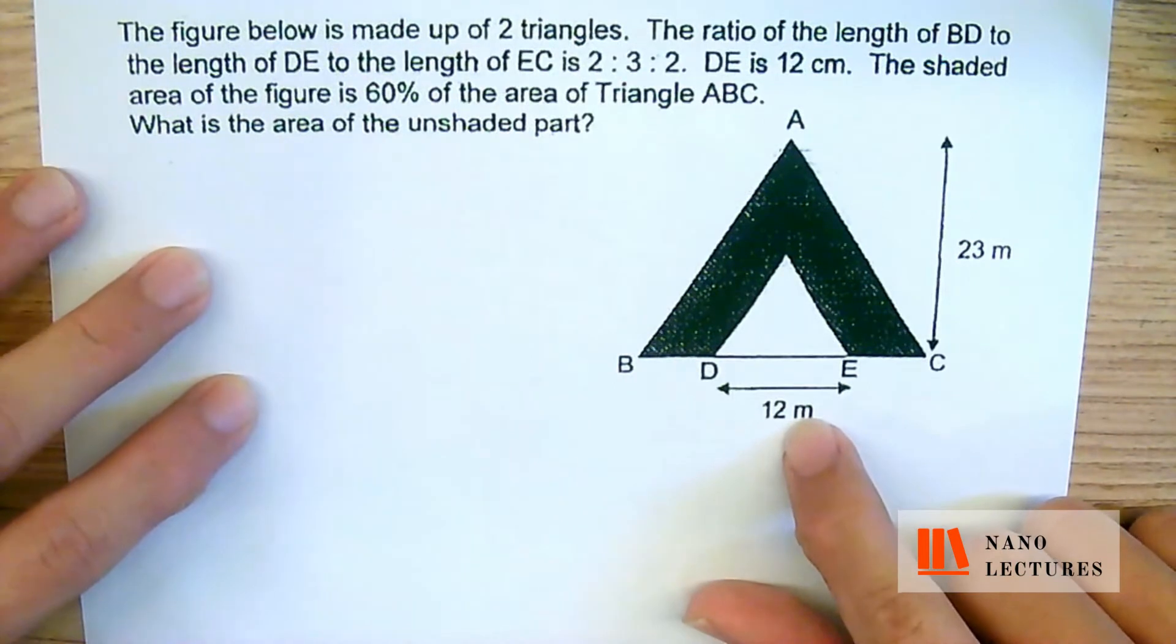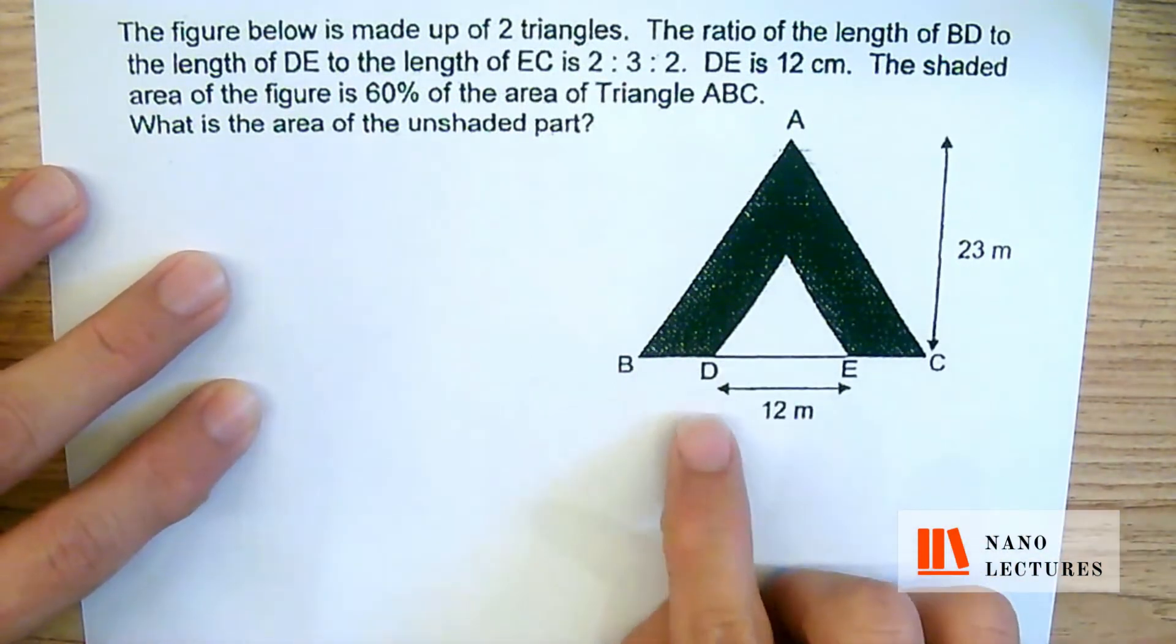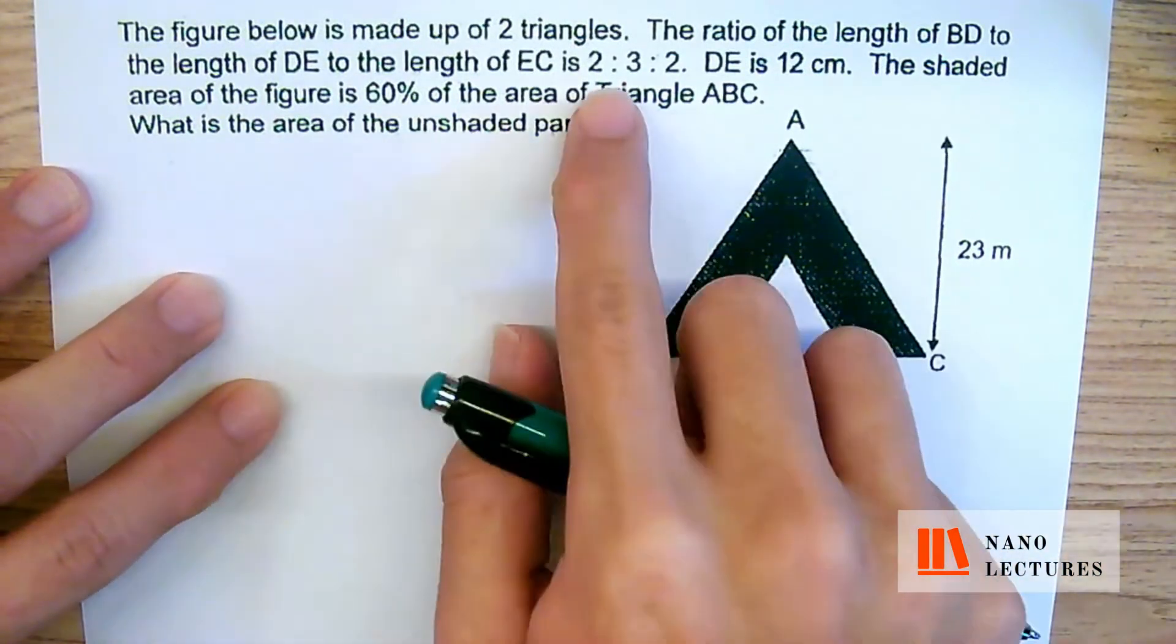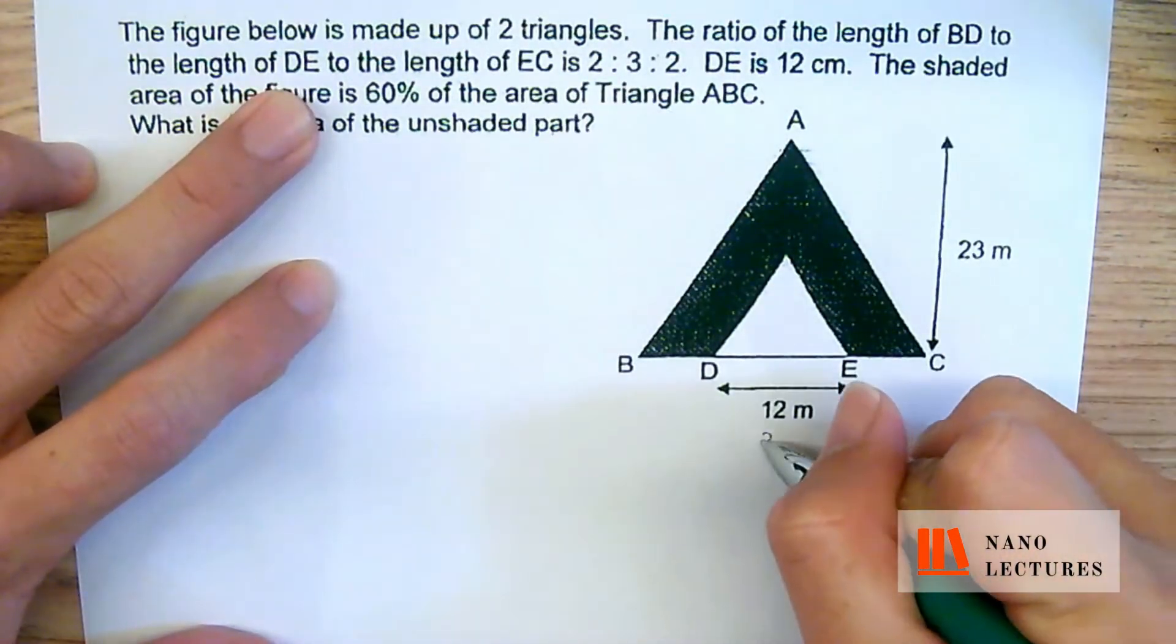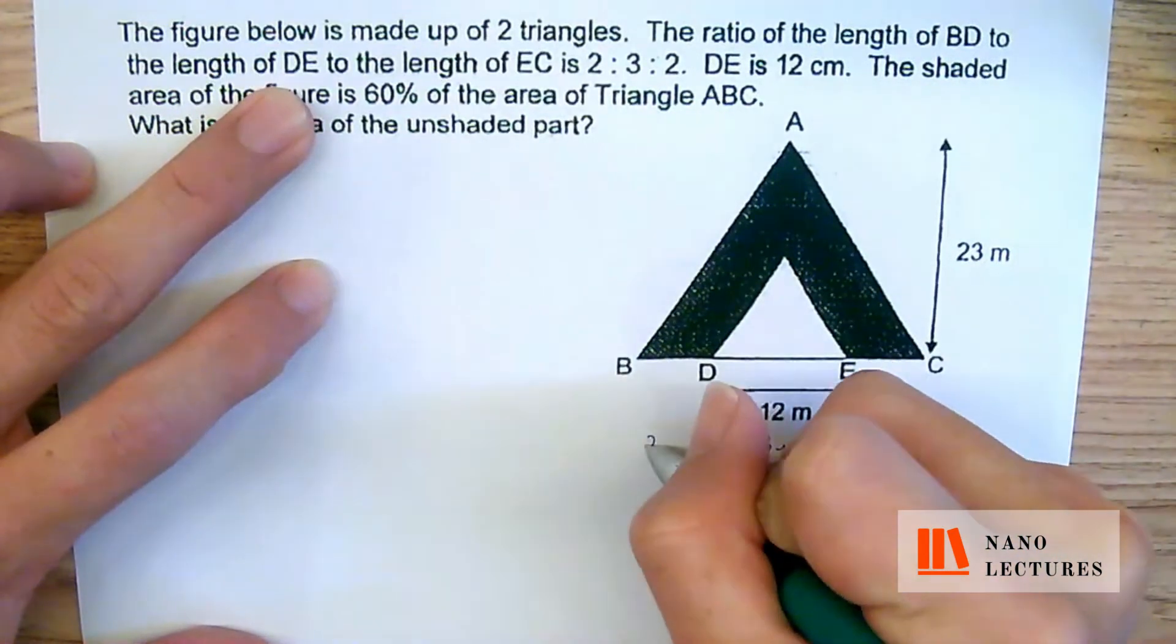Now, we have an opportunity right now to find out more information, so let's try to find out the value of BD. Since the ratio of BD to DE is 2 is to 3, if this one is 3 units, this will be 2 units.